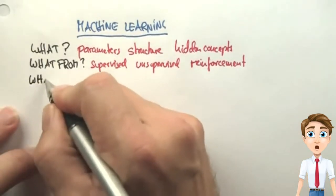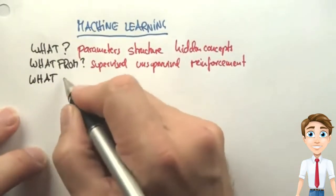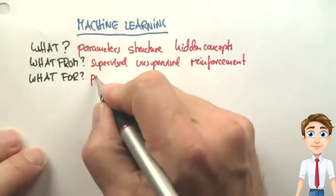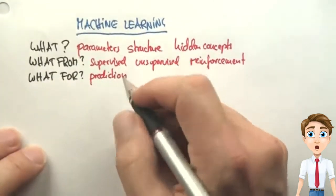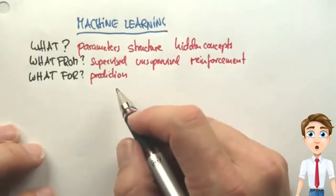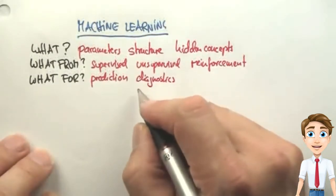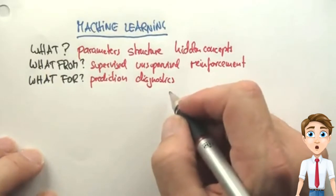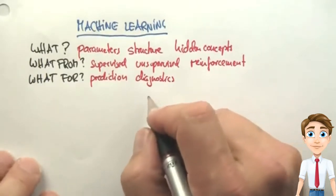There's different things you could try to do with a machine learning technique. You might care about prediction. For example, you might want to predict what's going to happen in the future, in the stock market for example. You might care to diagnose something, which is you get data and you wish to explain it and use machine learning for that.